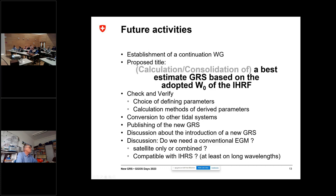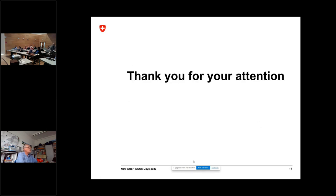A second discussion should be whether we also need a conventional Earth Gravitational Model. In my opinion, probably yes, we need one — though this is still to be discussed, and whether it should be a satellite-only or a combined EGM. Of course, if we want to be consistent, it should also be compatible with the International Height Reference System, at least on long-wavelength terms. If somebody wants to join this new working group, please contact me. Thank you for your attention.